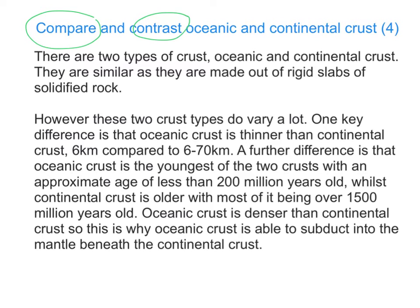The key terms in this question are oceanic and continental crust. I know I've got four marks to achieve, which means I need to talk about the similarities and differences between oceanic and continental crust in my answer. Because it's four marks, I need to write in sentences that are connected and developed, using the like-for-like structure.